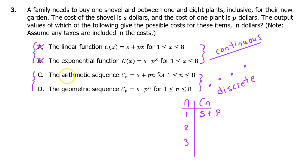Now we just need to decide if this will be an arithmetic sequence or a geometric sequence. If we only buy one plant, then the cost will be the cost of one shovel plus one plant. If we buy two plants, then the cost will be one shovel plus two plants. For three plants, it's the cost of one shovel plus three plants. If we buy n plants, the cost C_n will be S plus nP. And that's what we see right here. So the answer is C.